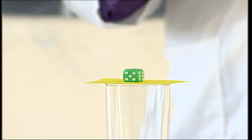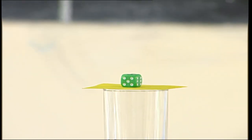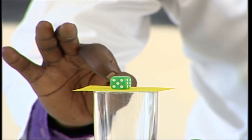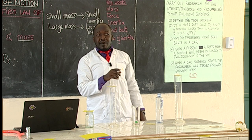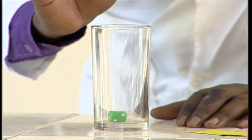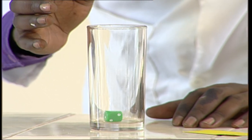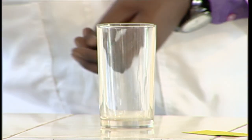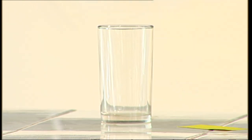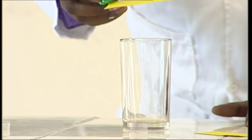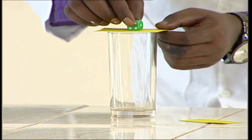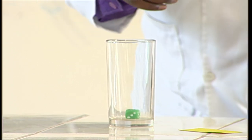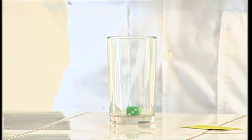We are going to flick the paper. Flicking means applying a gentle force using your finger. We apply a force on the manila paper and observe what happens. Do you see? I flicked the paper — the paper flies away, but the dye falls right inside the bottle. Let's repeat it one more time. The paper flies away, but the dye falls right inside.